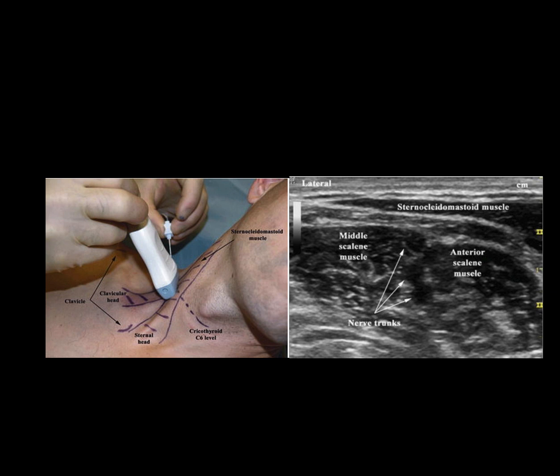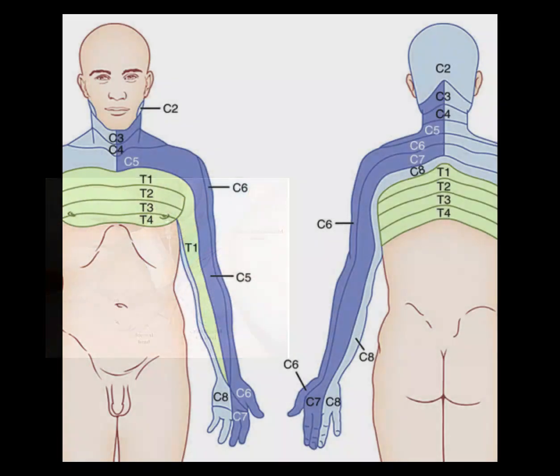Nerve stimulation using a 0.5 milliamp stimulus may be used to confirm that the needle is not within a nerve bundle. A negative aspiration test is performed to ensure the needle tip is not in a vascular structure. A test injection of a couple of mils of 5% dextrose may be used to confirm proper needle placement and confirm that resistance to injection is minimal prior to the administration of local anesthetic.